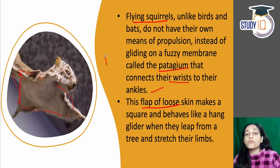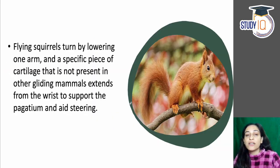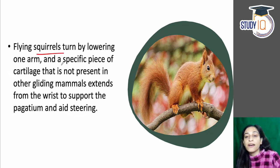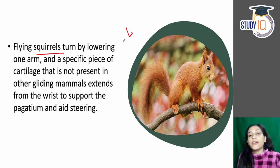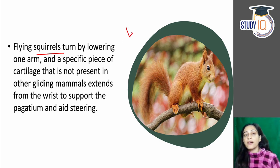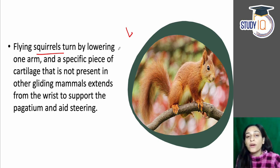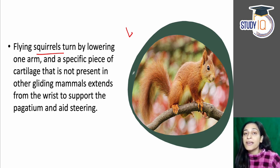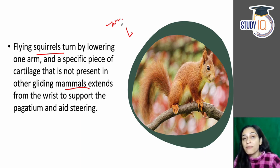When it moves from one tree to another, it stretches its limbs. Flying squirrels lower their arms and limbs. Here I am explaining the mechanism: it lowers one hand, just falls apart, and there is a specific cartilage which helps in gliding. This cartilage is not present in other mammals that don't have gliding ability. Because of its wrists, it lets motion move to the ankles, which helps control direction.